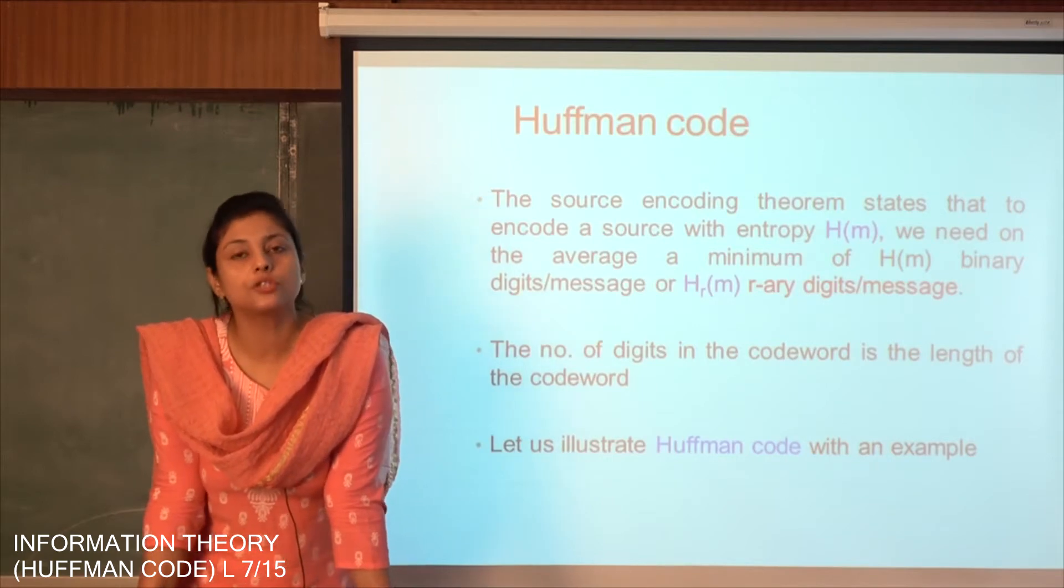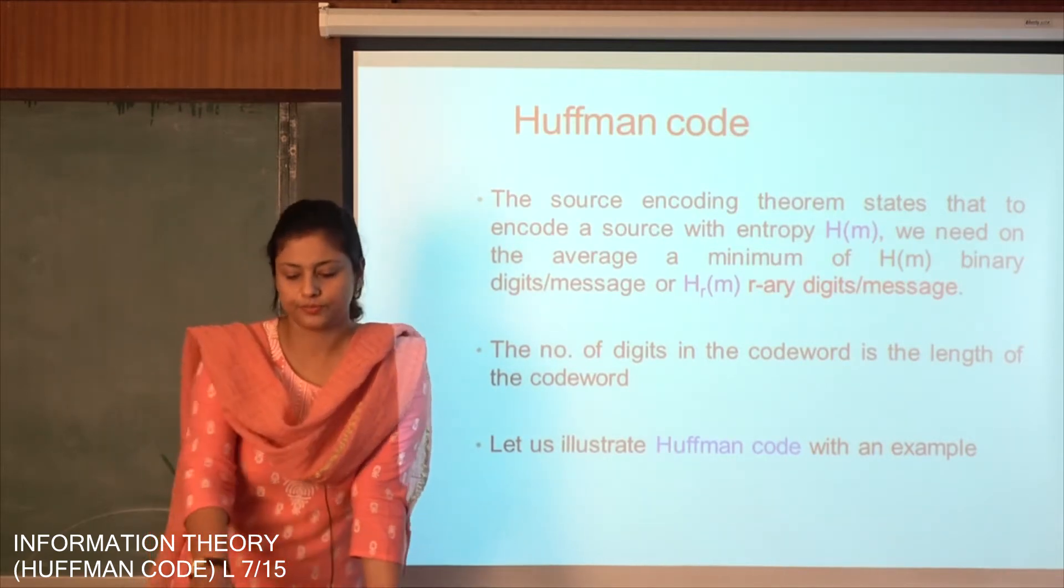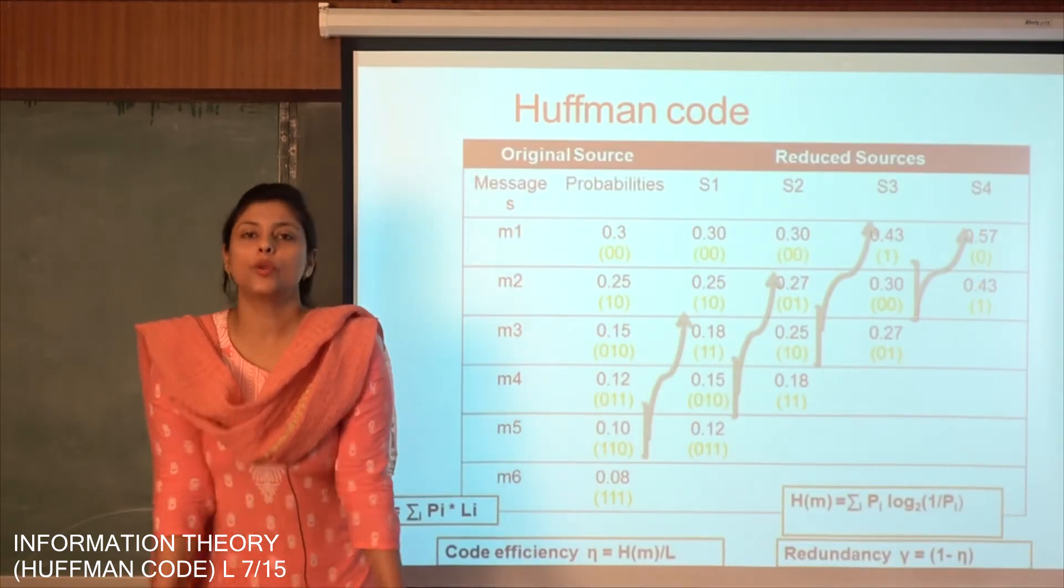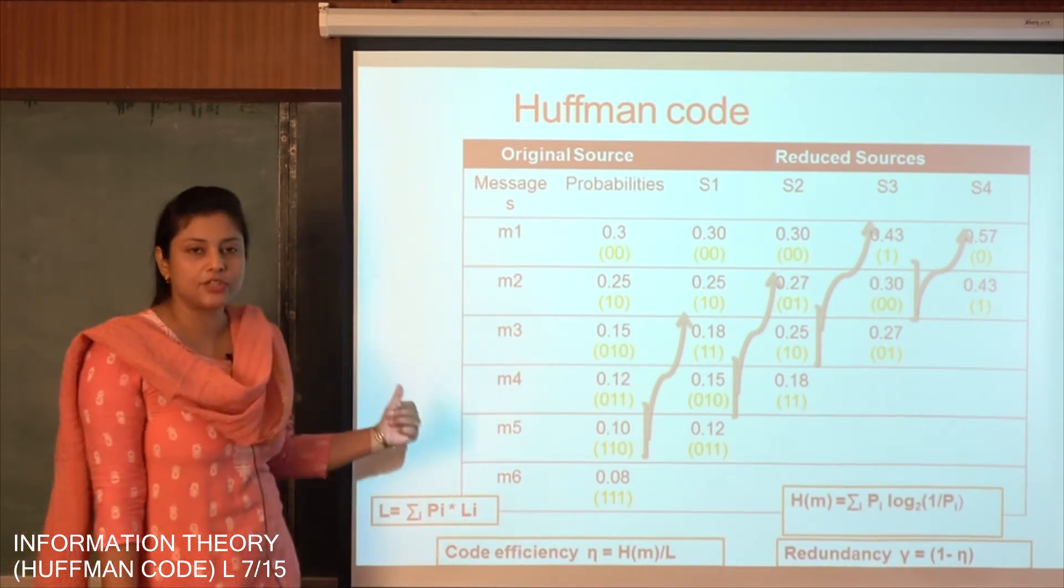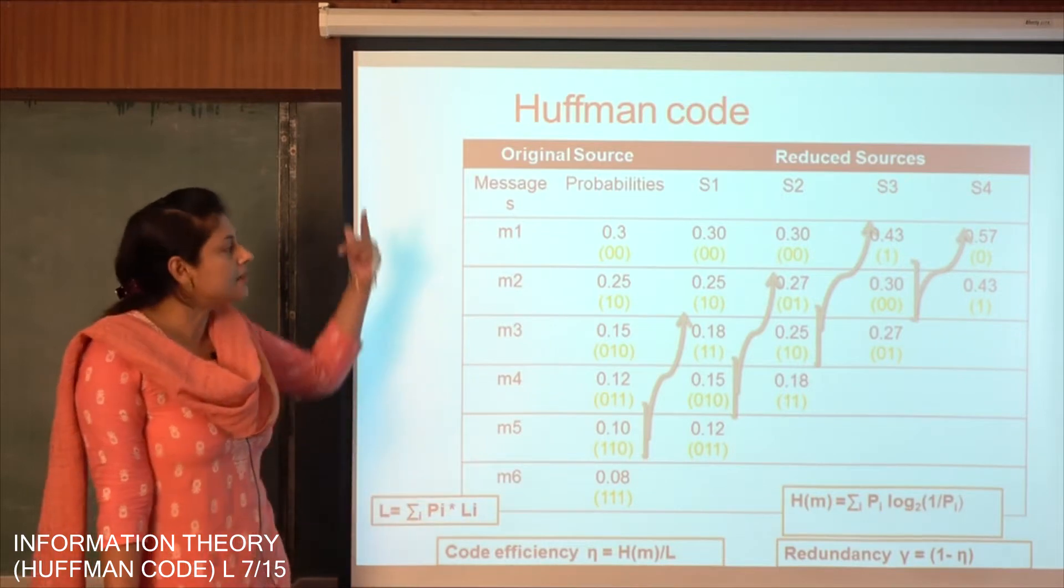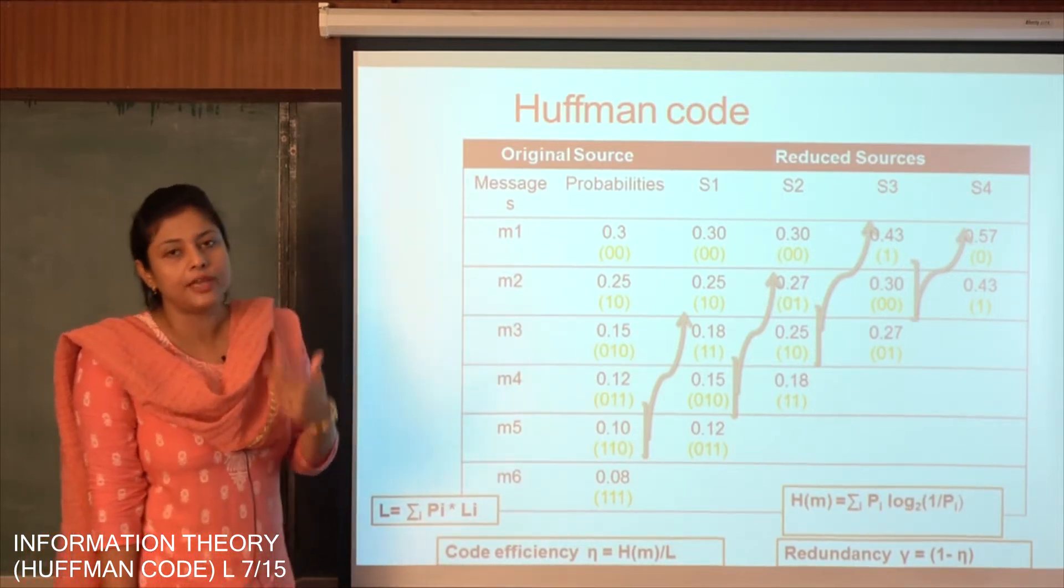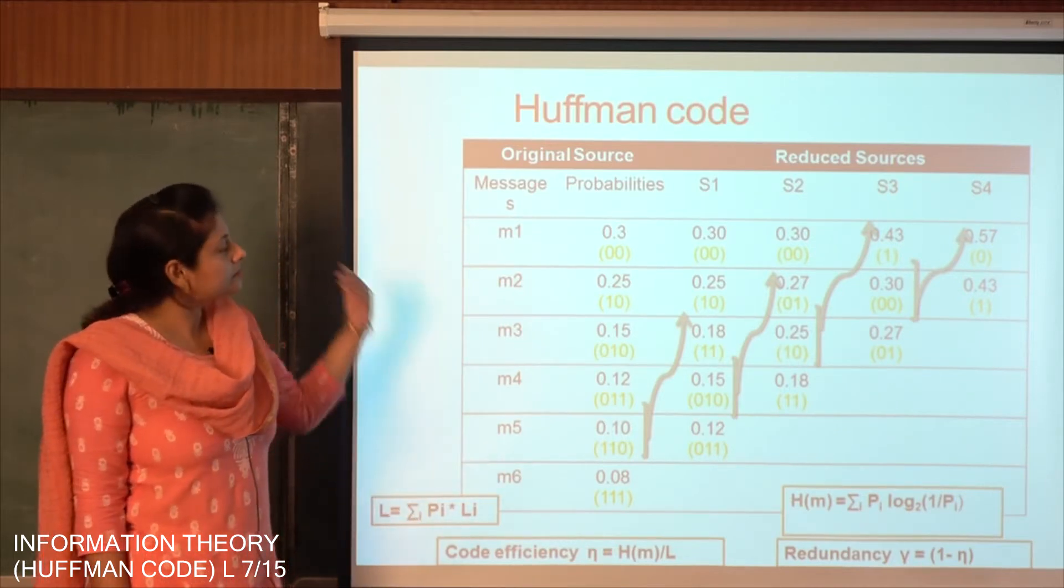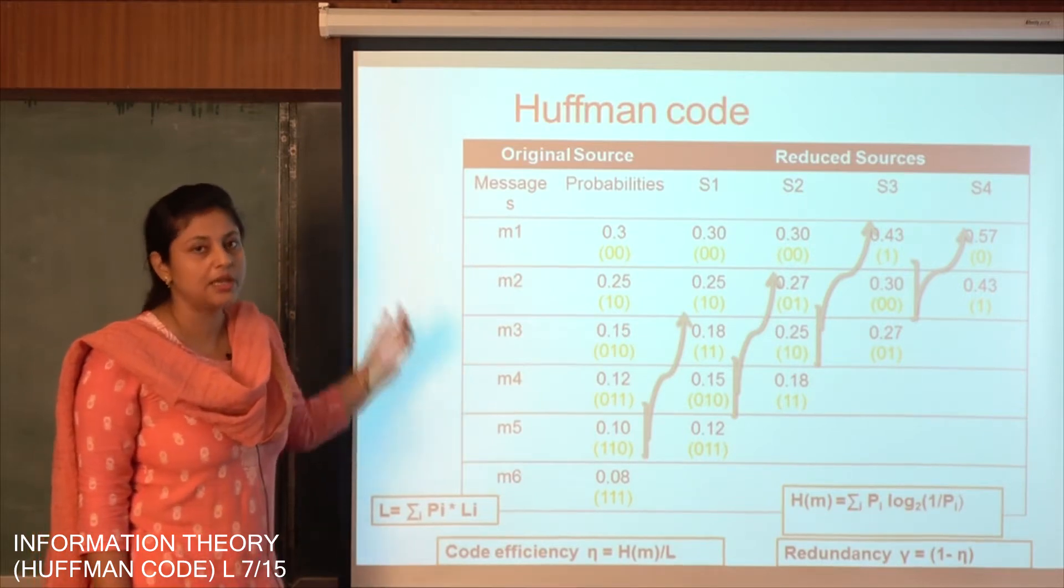Let us look at the first source encoding algorithm which is called Huffman code. Let us understand Huffman code with an example. Here I have given 6 messages starting from M1 through M6 having different probability of occurrences. First of all we need to arrange them in descending order of probabilities. Here in this problem, it has already been given in descending order.